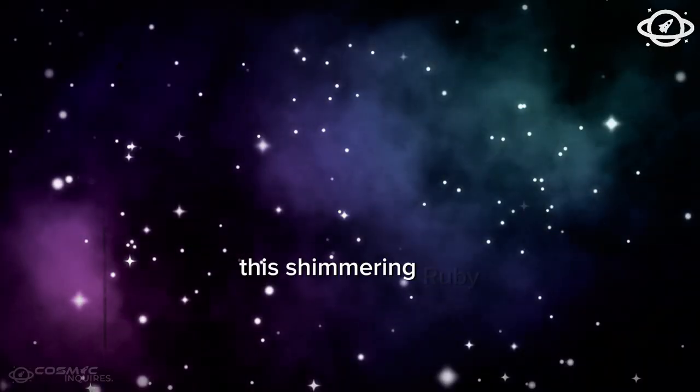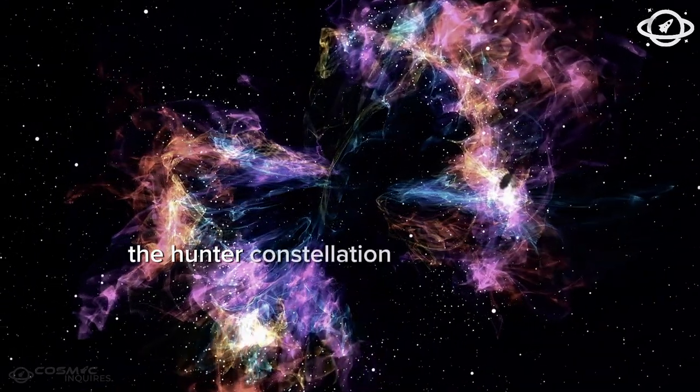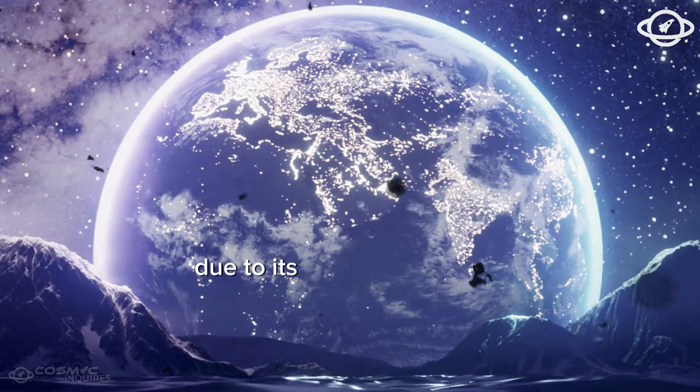This shimmering ruby-red star is located at the upper right shoulder of Orion, the Hunter constellation, and can be easily spotted due to its striking reddish hue.